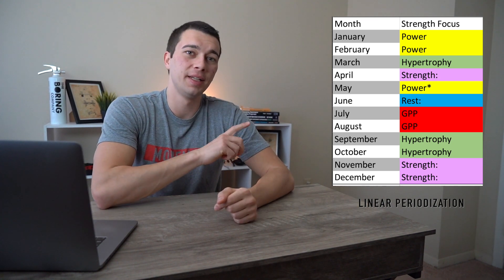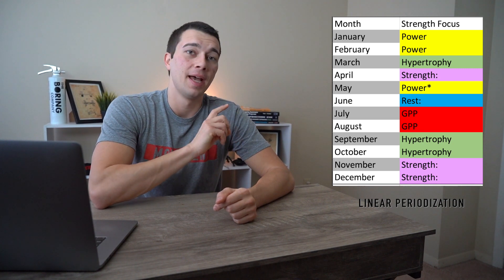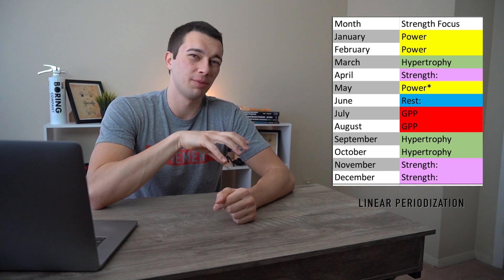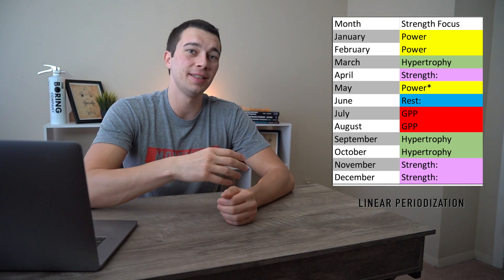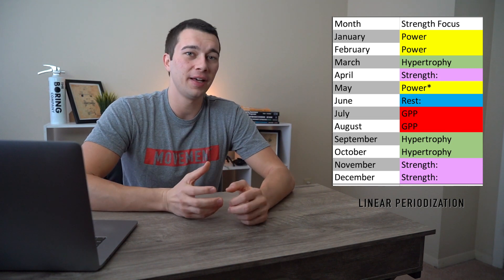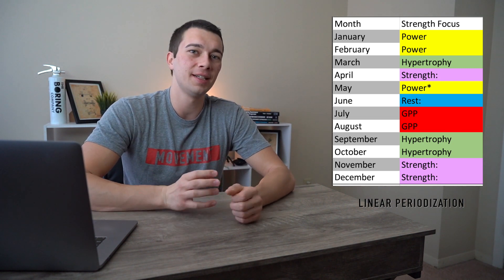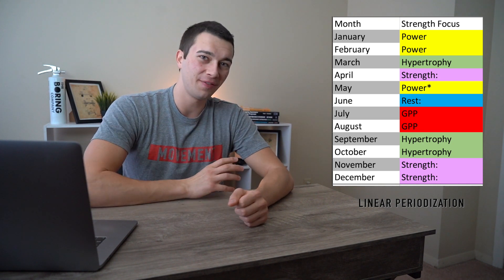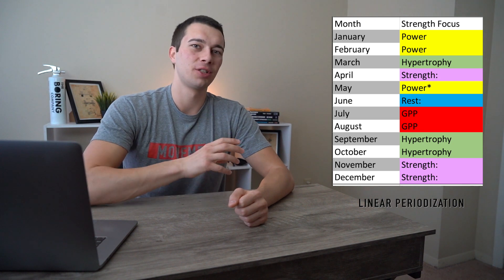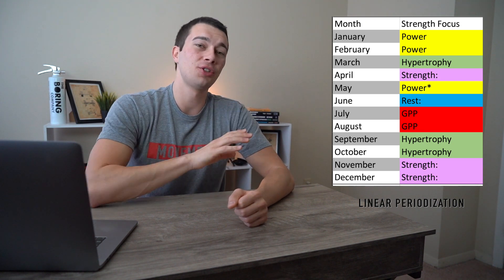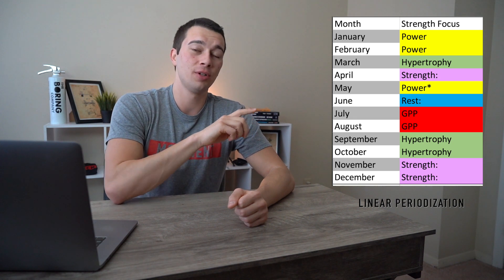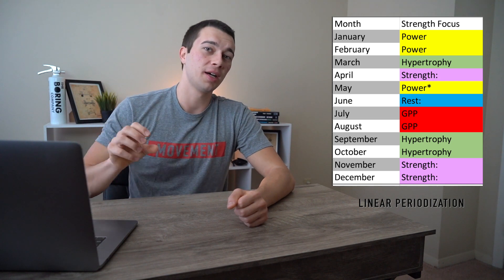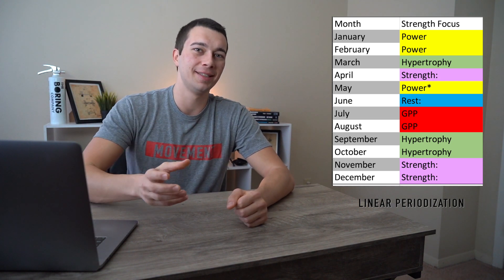One peak is in February and the primary peak is in May. In this program we're taking June as complete or relative rest — the postseason — then moving into a GPP phase, then hypertrophy-focused work for a few months, then a strength phase, then power, and then the first peak in February. Volume is slowly going down, intensity is slowly going up, building block upon block to peak power in season.